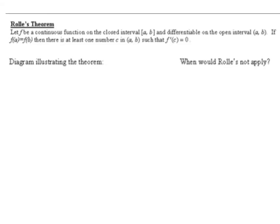So here we go. This is Rolle's theorem. Rolle was a mathematician who didn't particularly care for calculus at all, which is kind of ironic that one of his theorems is included in calculus. Rolle's theorem says: let F be a continuous function on a closed interval and differentiable on the open interval. So here are three vocab words you need to know. F is continuous on a closed interval and differentiable on the open interval. If f of a equals f of b, which we saw on the previous screen, then there is at least one number C in the interval such that f prime of C equals zero.